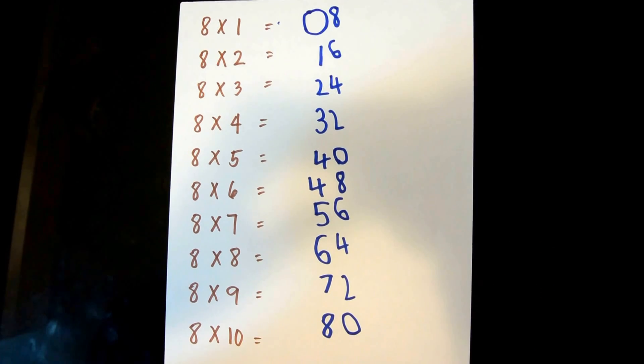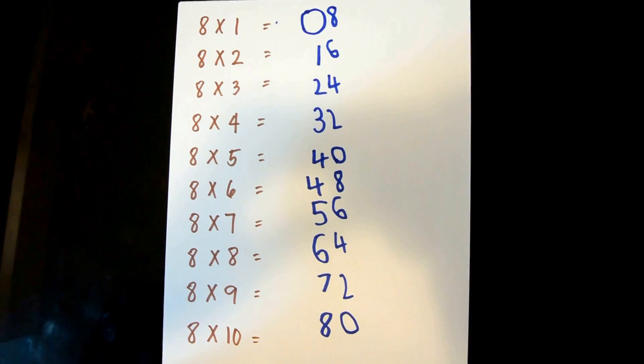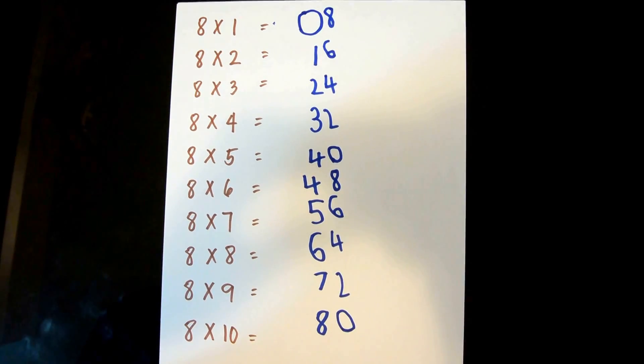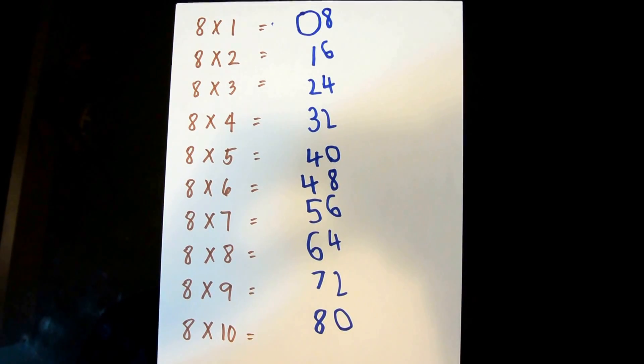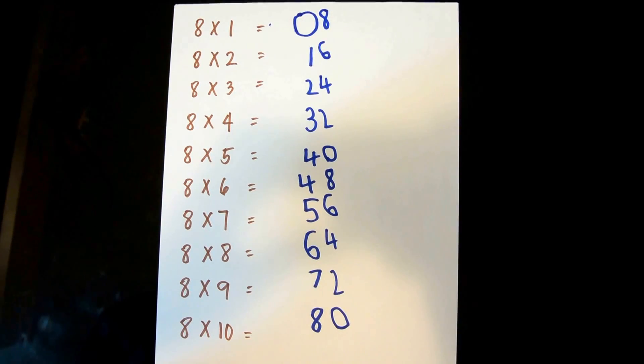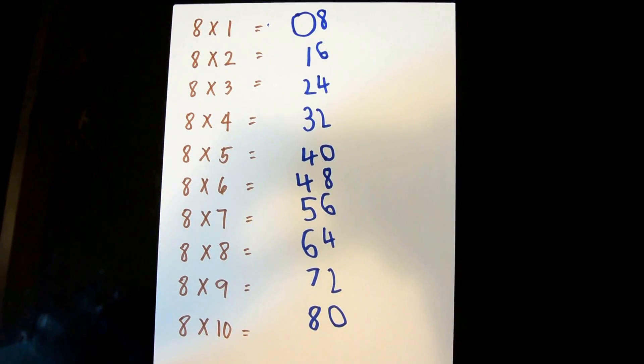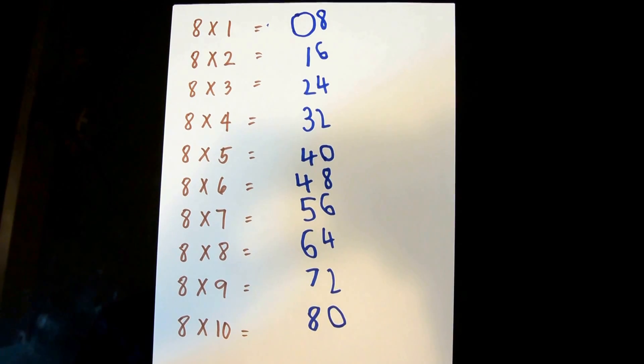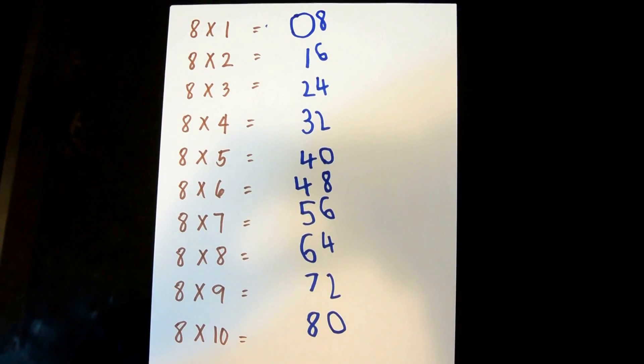× 1 is 8, 8 × 2 is 16, 8 × 3 is 24, 8 × 4 is 32, 8 × 5 is 40, 8 × 6 is 48, 8 × 7 is 56, 8 × 8 is 64, 8 × 9 is 72, and 8 × 10 is 80.